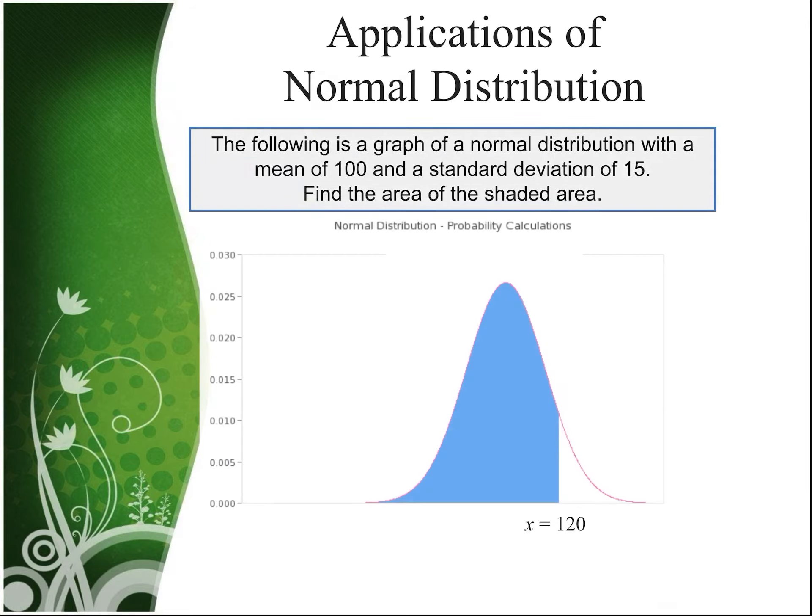So here's our first example. The following is a graph of a normal distribution with a mean now of 100 and a standard deviation of 15. Find the area of the shaded region. So you'll notice we still have our bell curve. Our mean is still in the middle at the peak and the standard deviation still helps us find z-scores and probabilities, but we don't have a mean of 0 and a standard deviation of 1 anymore. So we're going to go back to the formula for z-scores, that z is equal to the x-value minus the mean divided by the standard deviation.